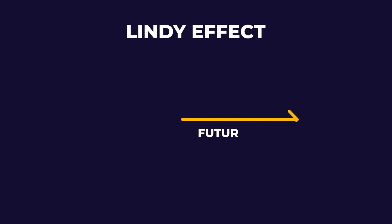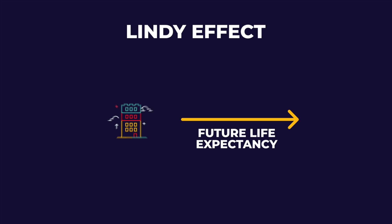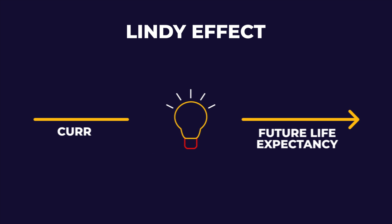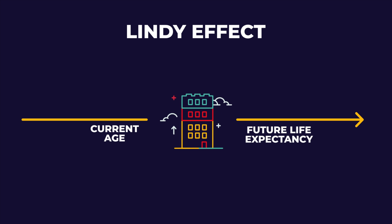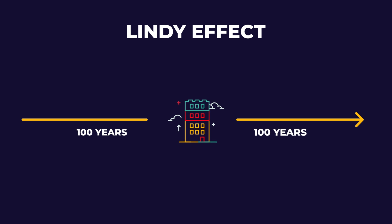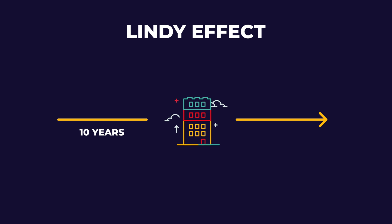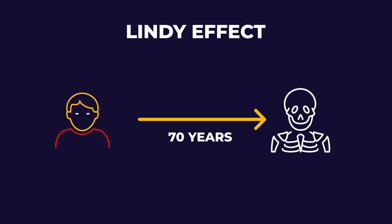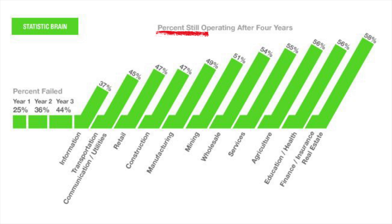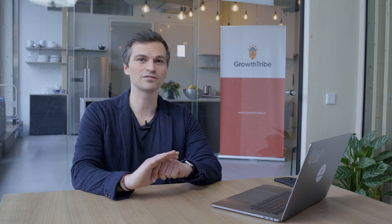Based on everything we've said so far, you might feel like industries are being disrupted and incumbents are highly likely to face disruption. Which is why it's interesting to also look at the Lindy effect — a theory that the future life expectancy of non-perishable things, like technology, a business, or an idea, is proportional to their current age. Every additional period of survival implies a longer remaining life expectancy. If a business is 100 years old, it should expect to be around for another 100 years. Under the effect, the mortality of a business decreases with time — but don't let this make you complacent.